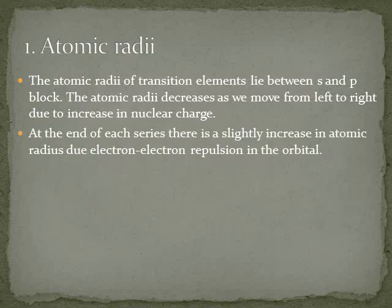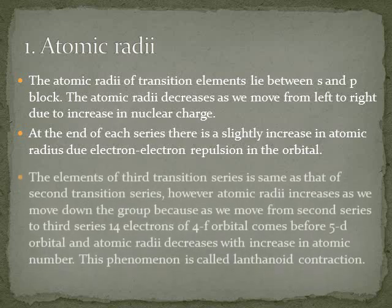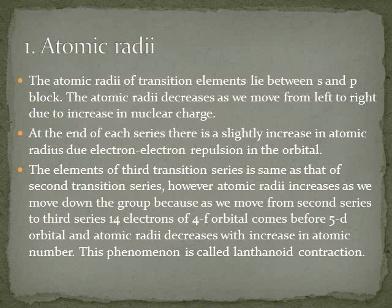Har series ke end mein atomic radii badhni chahiye, lekin badhti nahi kyunki electrons aapas mein repel karne lagte hain. Second aur third transition series ke liye — kyunki f-orbital mein lanthanoids ke 14 electrons enter karte hain, atomic radius decrease hota rehta hai, isliye second aur third transition series elements ke atomic radius almost same hote hain.